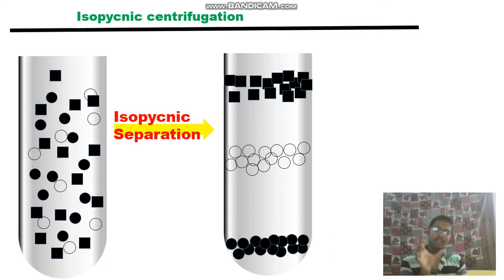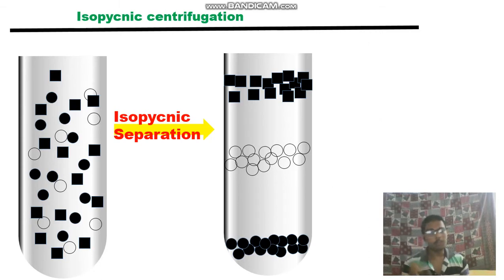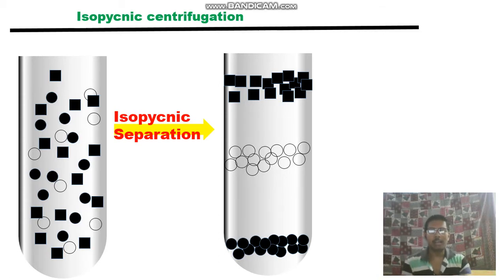Isopycnic centrifugation wholly relies on density — the density of the particles will be exactly equal to the density of the medium where they are accumulating. Separation here varies significantly with the medium being used, because of the osmotic pressure factor. There are two types of gradients people use, which is another topic to discuss separately.